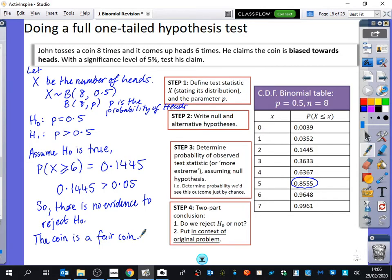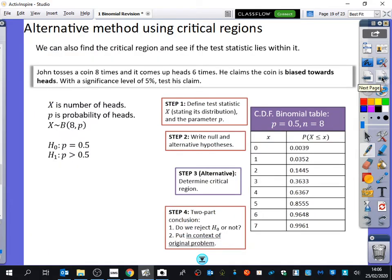It'll all be on Padlet as well. This is the other way that you could do this. We've already looked at what the critical regions were. So it's the same thing as before. X is the number of heads. P is the probability of heads. X is binomially distributed with eight trials and the probability P. The null hypothesis is that P is 0.5. The alternative hypothesis is that P is greater than 0.5. The critical region...